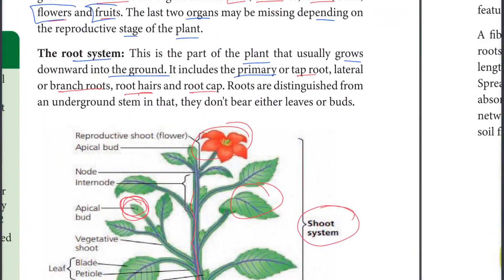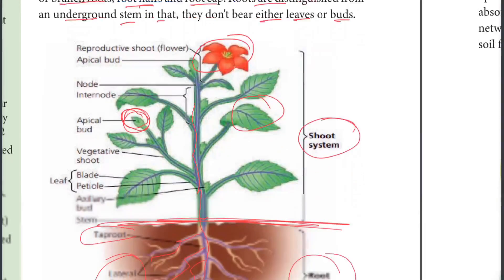The roots are distinguished from underground stems in that they don't bear either leaves or buds.